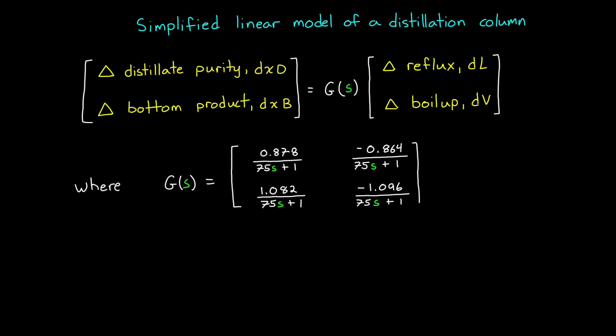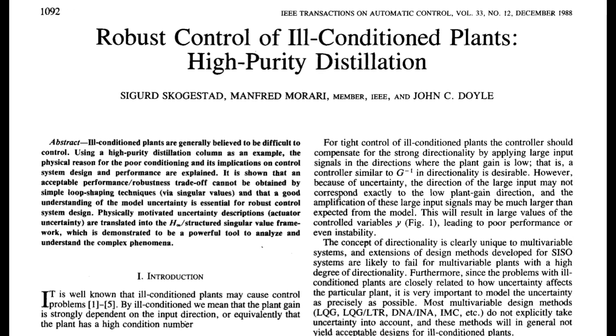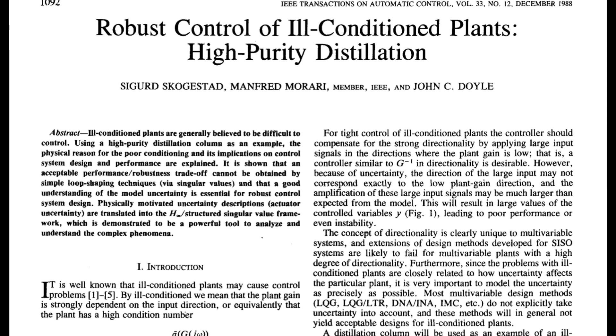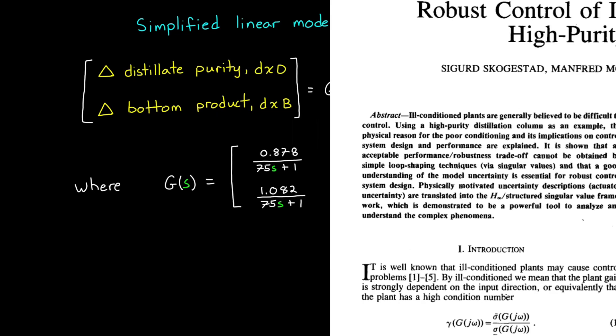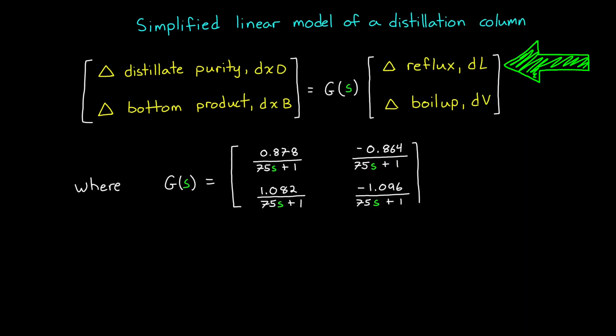So with all that in mind, let's look at a simplified linear model for this system. By the way, I got this example from a paper by Skogestad, Morari, and Doyle. And I've left a link to it in the description if you'd like a more complete explanation. This model has two inputs, the change in reflux and the change in boil up. And there's two outputs, the change in the purity of the distillate and the change of the concentration of the bottom product. And G of S is the mapping that relates the inputs to the outputs.